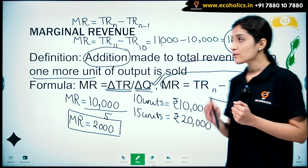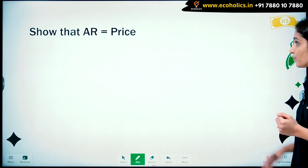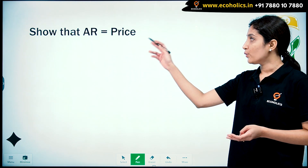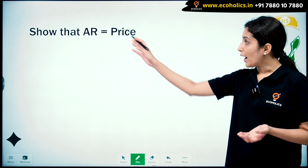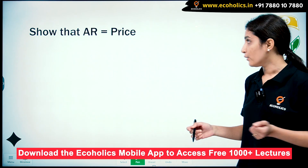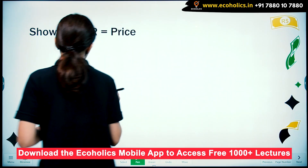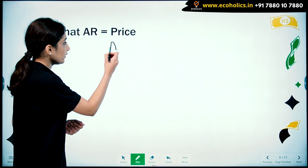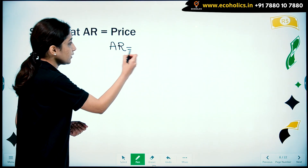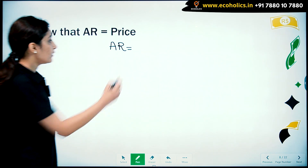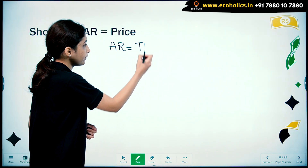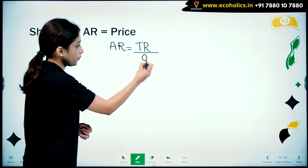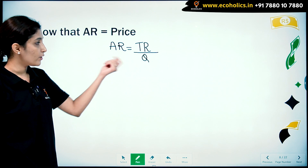Now let's look at numericals based on these concepts. Show that average revenue is equal to price. Average revenue price ki equal kaise aata hai? Let's look at the formula for average revenue first. The formula for average revenue was TR divided by Q.